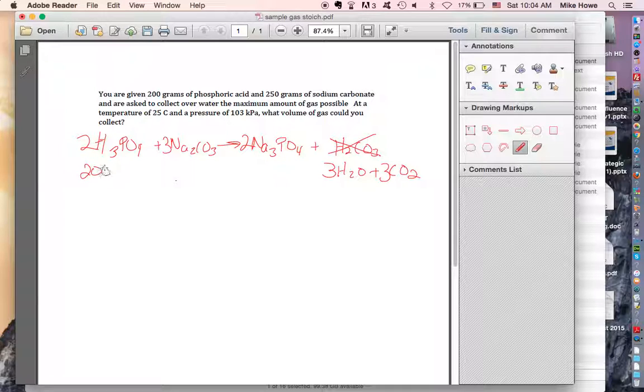We're given 200 grams of phosphoric acid and 250 grams of sodium carbonate. I'm going to assume that you know how to change to moles. So the 200 grams of phosphoric acid, divide that by 98, which is the formula mass. So that gives you 2.04 moles of that. And then the sodium carbonate, you've got 250, you're going to divide that by 106, and you're going to get 2.35 moles of sodium carbonate.